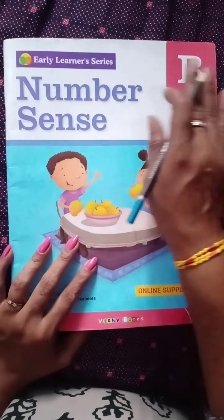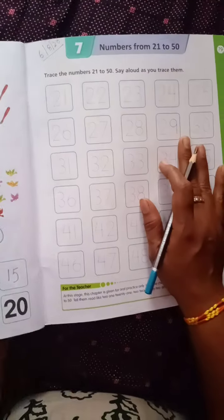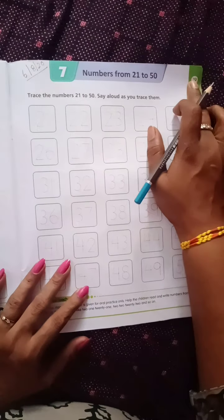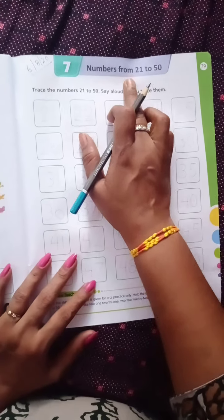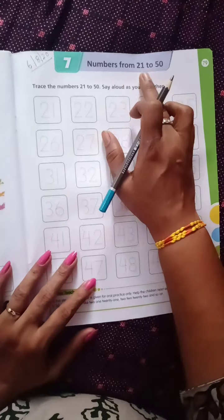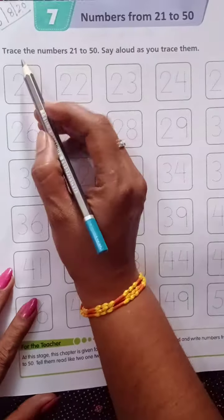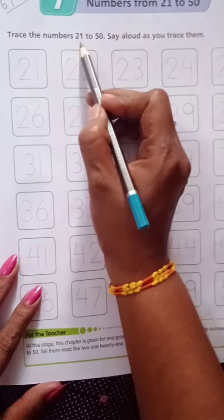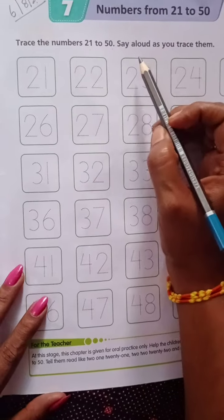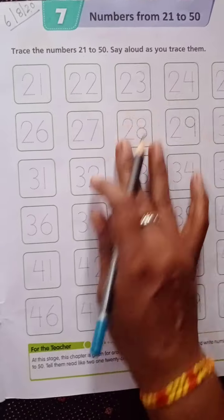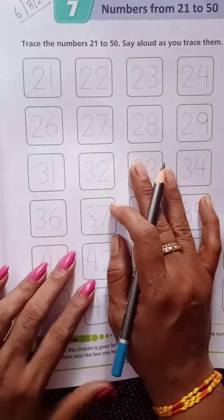Take out your number sense book, open it to page number 79, numbers from 21 to 50. Write the date: 6-8-2020. Here it is. Trace the numbers 21 to 50 and say them loudly as you trace. You have to say loudly and trace. Come, let us trace.